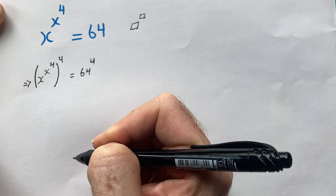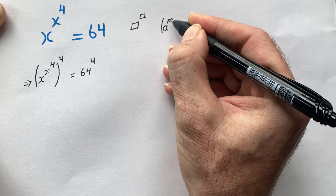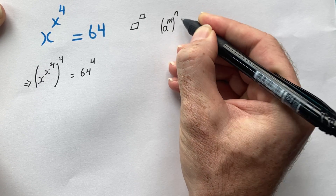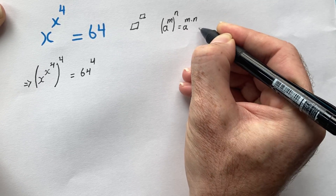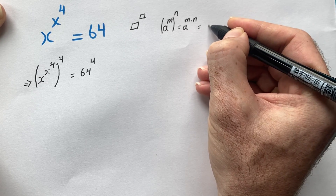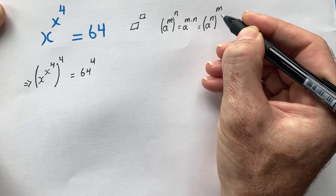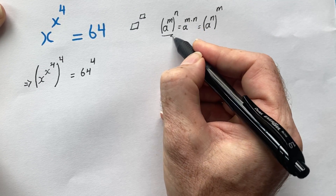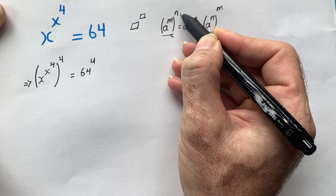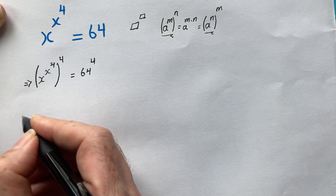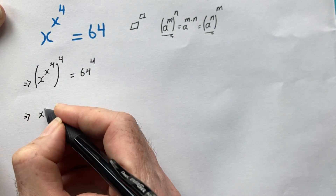To continue the solution, I'll use the exponential rule that says a to the power of m, raised to the power of n, equals a to the power of m times n. This can also be written as a to the power of n raised to the power of m — meaning we can change the placement of the exponents.